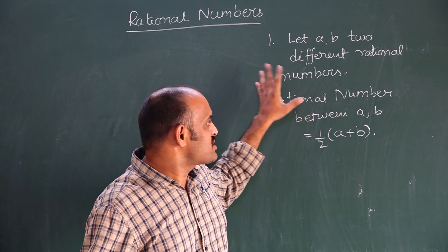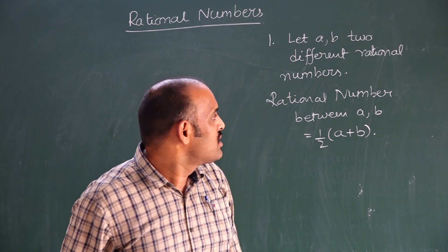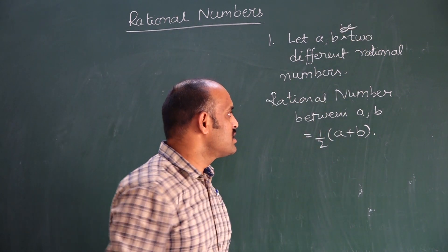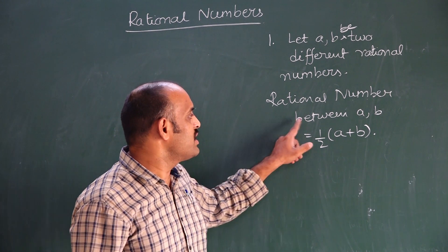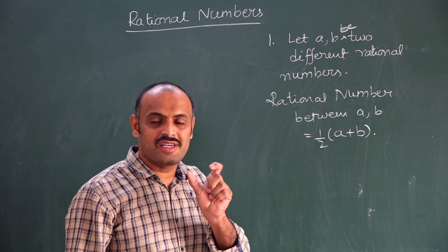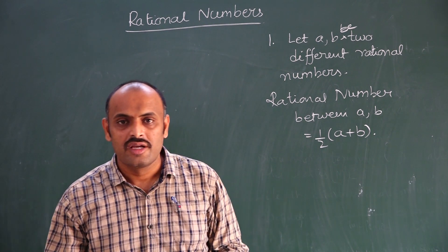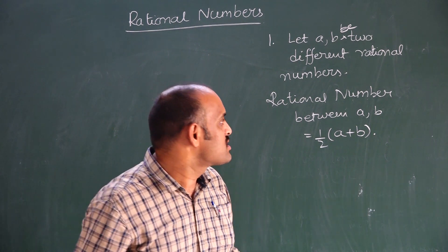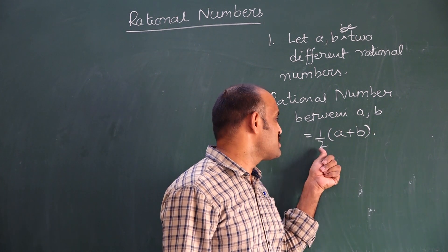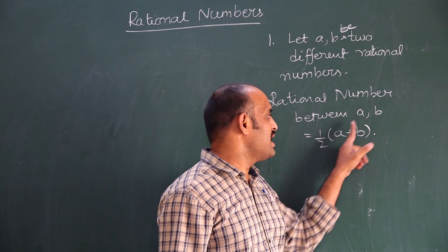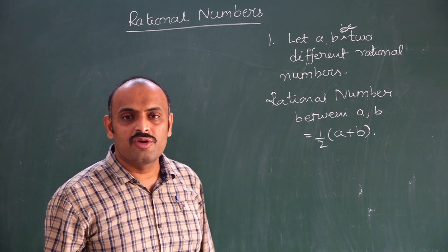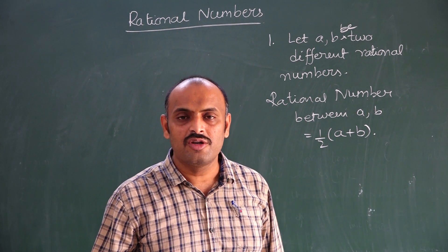Let A, B be two different rational numbers. How to find a rational number between A and B? The name 'mean method' or 'average method' says it all. Average is nothing but the sum of the numbers divided by the count of numbers. So A plus B divided by 2. The rational number between A and B is A plus B by 2. Using this formula, we are going to find any number of rational numbers between two rational numbers.